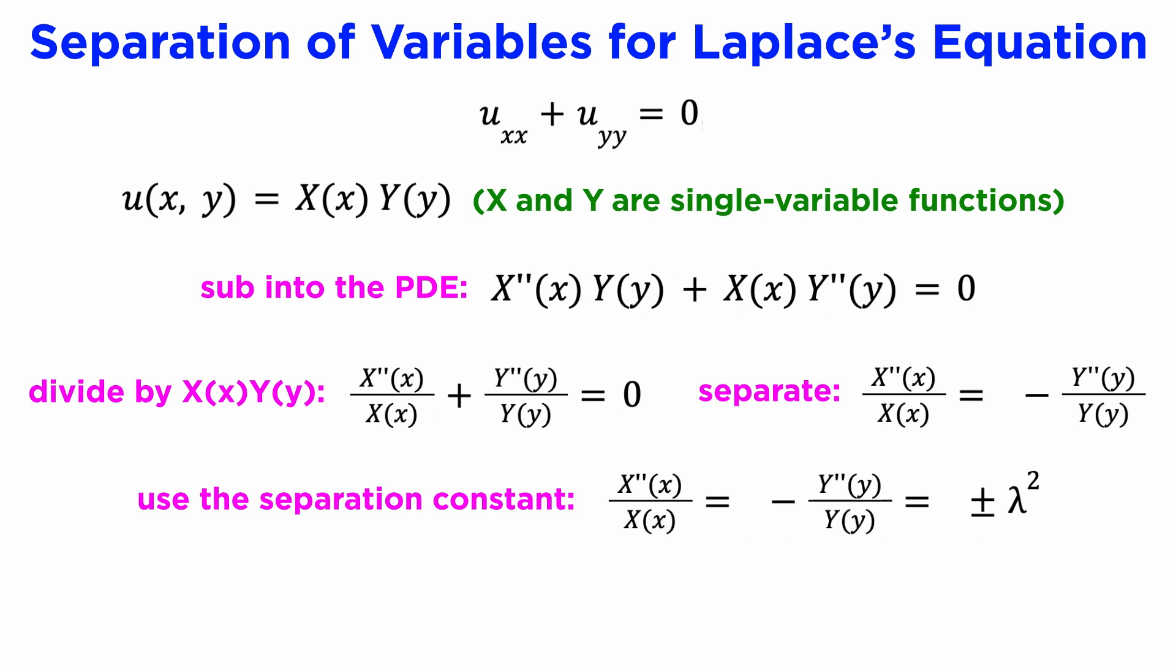We call this constant the separation constant, conventionally using the symbol plus or minus lambda squared, where we can choose whichever sign makes the subsequent algebra easier.